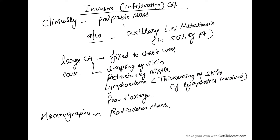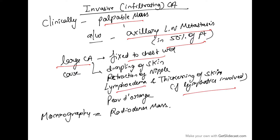Clinically, invasive carcinoma will present as a palpable mass, and in 50% of patients there will be axillary lymph node metastasis. If it is a large size carcinoma, it may be fixed to the chest wall, may cause dimpling of the skin, retraction of the nipple, and lymphedema and thickening of the skin if the lymphatics are involved — peau d'orange. On mammography, it will have a radio-dense mass appearance.